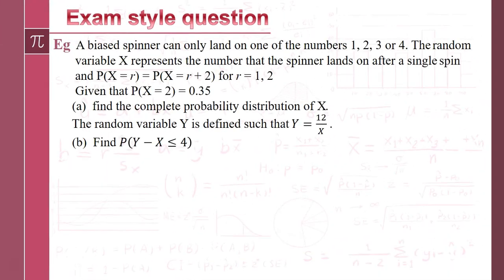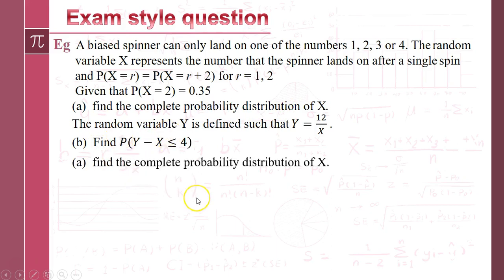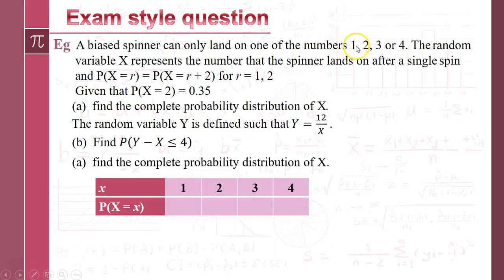The last thing in this section is an exam-style question. We've got a biased spinner that can only land on four outcomes, and the random variable represents the number the spinner lands on after a single spin. We're told the probability that X equals R is the same as the probability that X equals R plus 2, when R is 1 or 2. We're also given that the probability that X equals 2 is 0.35.